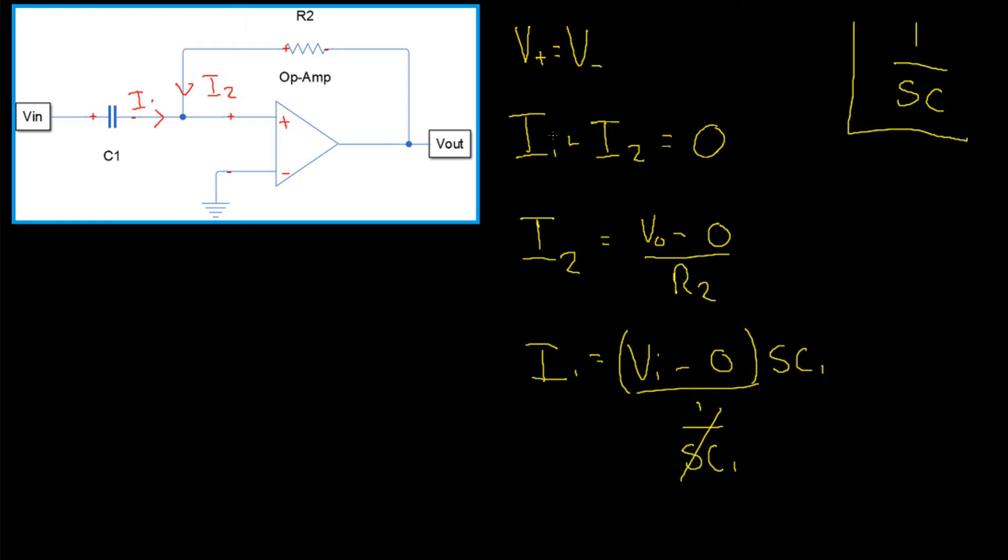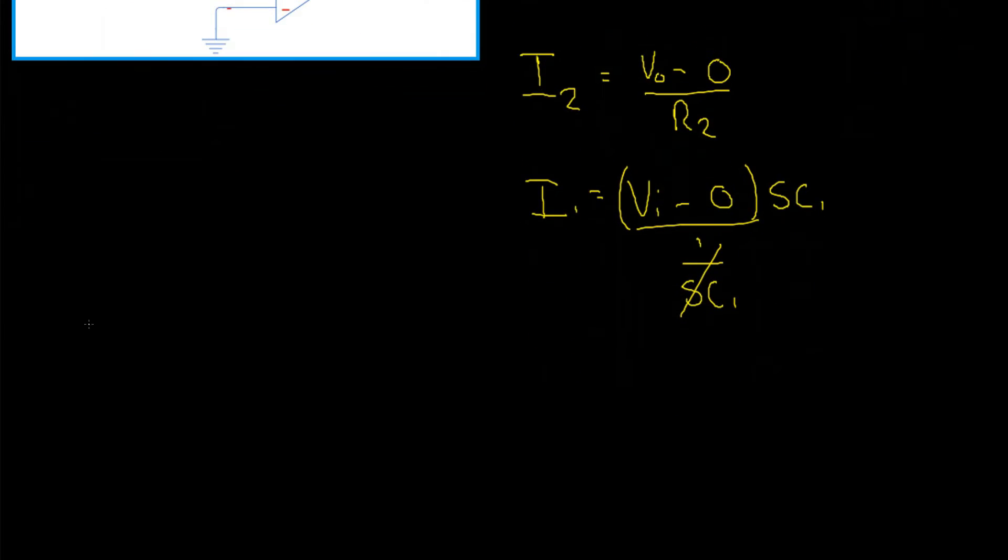So now, let's use our KCL described above to relate these voltages and resistances to one another. I1, which is simply VI SC1, plus I2, which is VO divided by R2, equals 0.